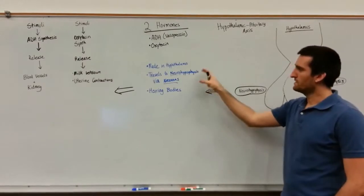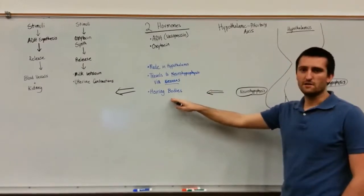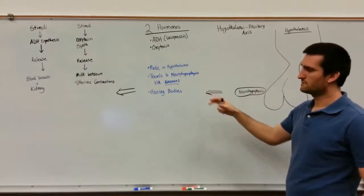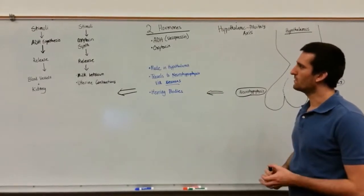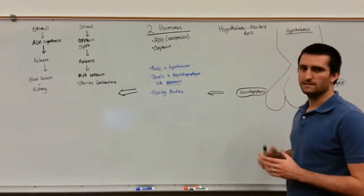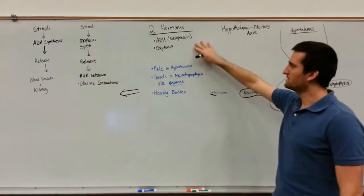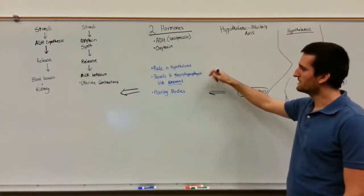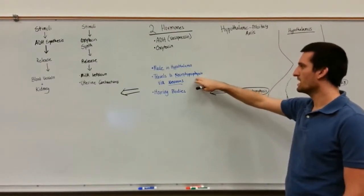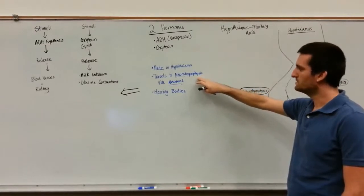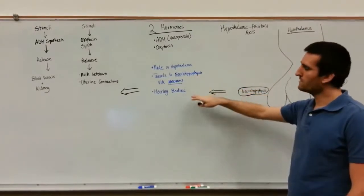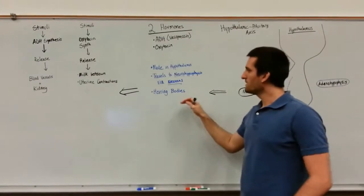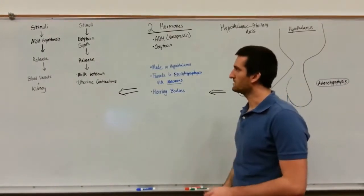Neurons within these systems have swellings called herring bodies. These swellings are actually going to store the synthesized hormone until a release. Again, these two hormones will be made in the hypothalamus, travel down to the neurohypophysis, and when stimulated, it will secrete the hormones being stored in the herring bodies.